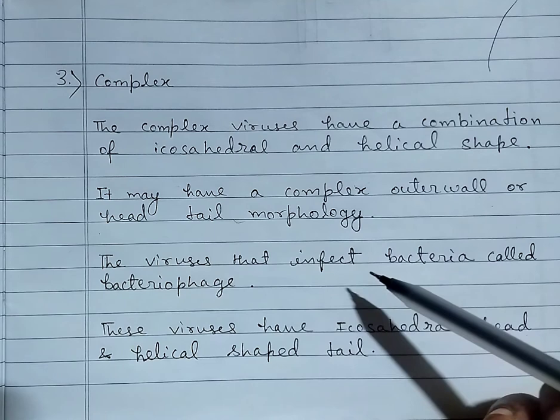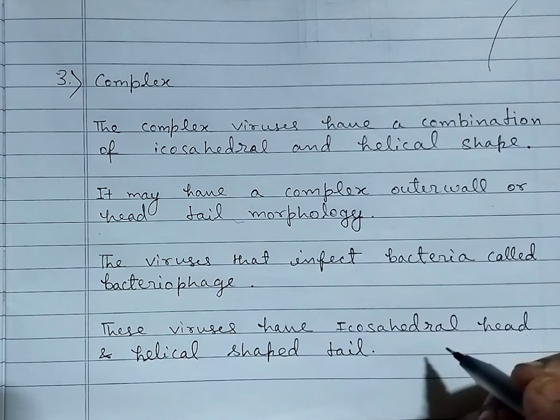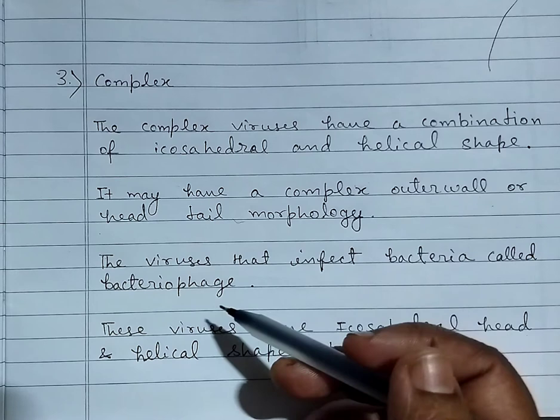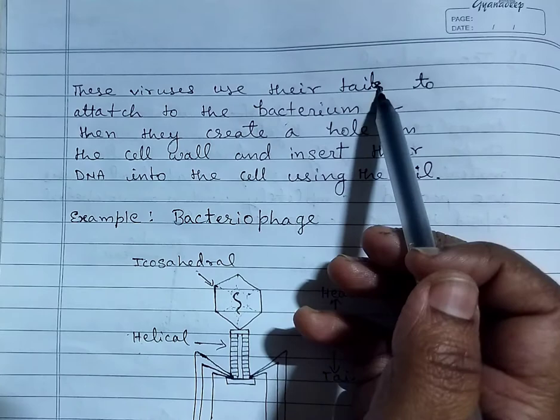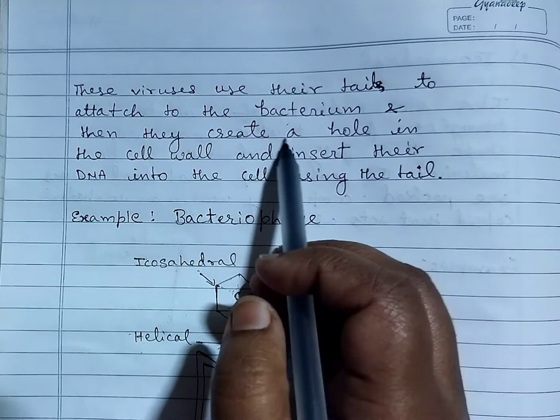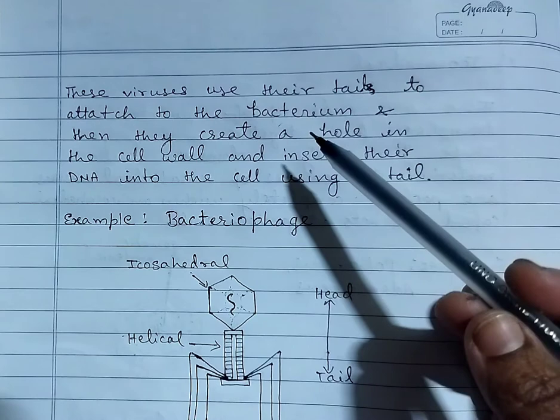The viruses that infect bacteria are called bacteriophages. These viruses have an icosahedral head and a helical-shaped tail. They use their tails to attach to the bacterium, then create a hole in the cell wall and insert their DNA into the bacterial cell by using their tail.